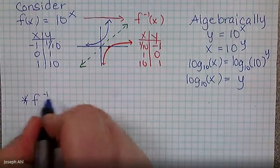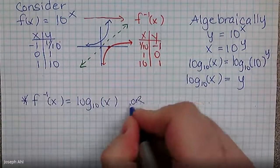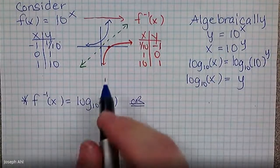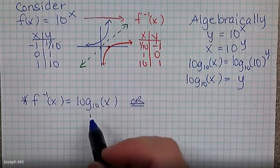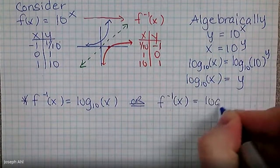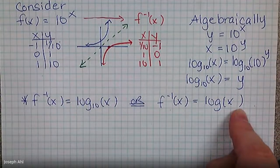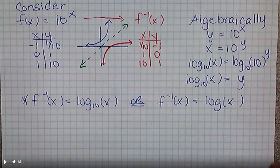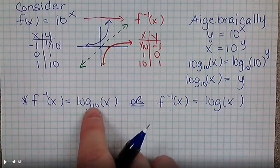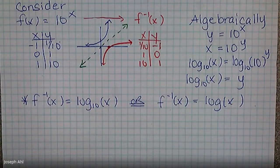You can write F inverse of X as log base 10 of X. More commonly, because base 10 is the number system we work in, log base 10 of X is known as a common log — written simply as log of X. If you see log X written anywhere, it is definitely talking about a base 10 log. We can have many other bases within our logs, but log X by itself is definitely base 10.